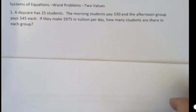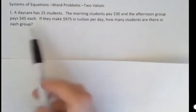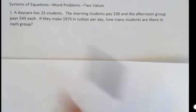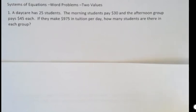The first one I'm seeing, there's a daycare that has 25 students. The morning students pay $30 a piece and the afternoon group pays $45 each. If they make $975 in tuition per day, how many students are there in each group?